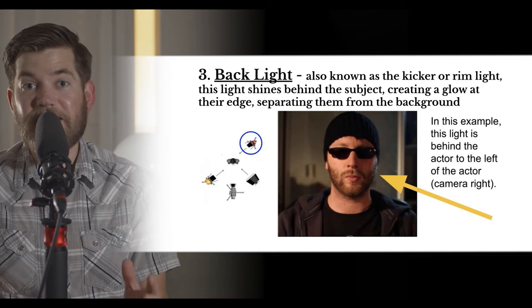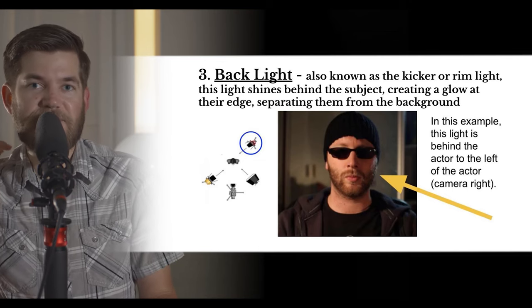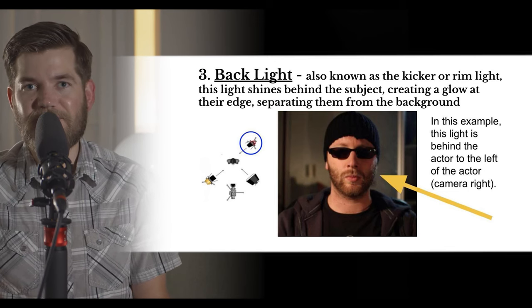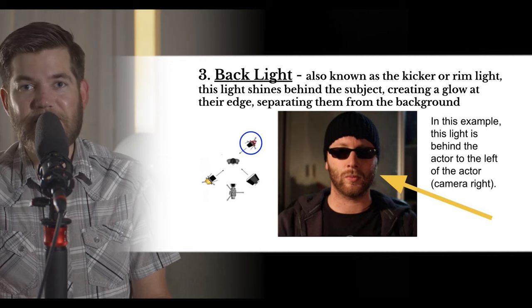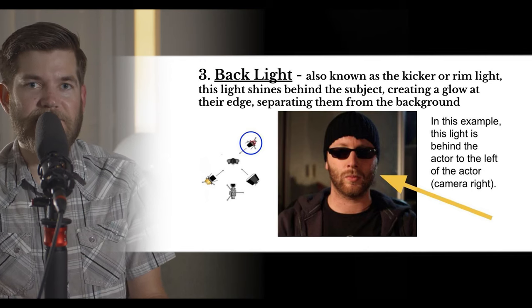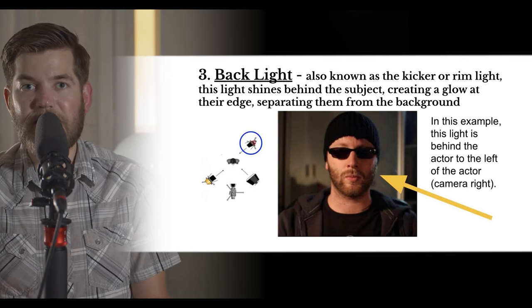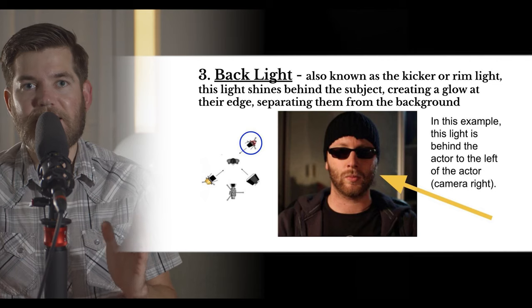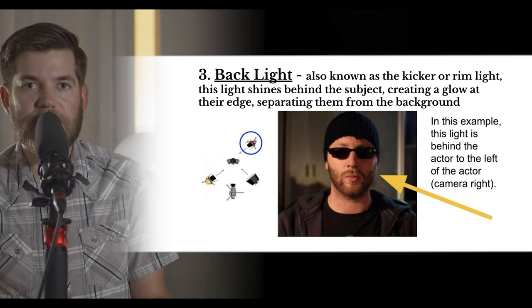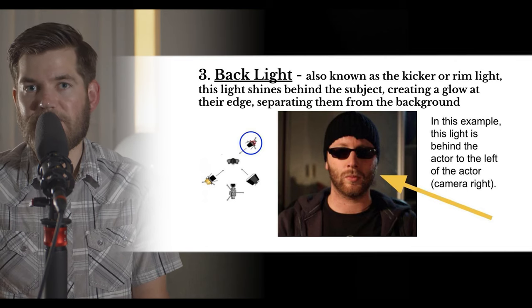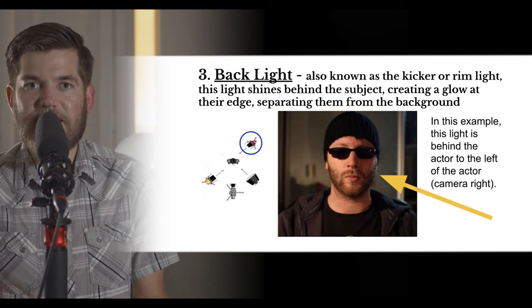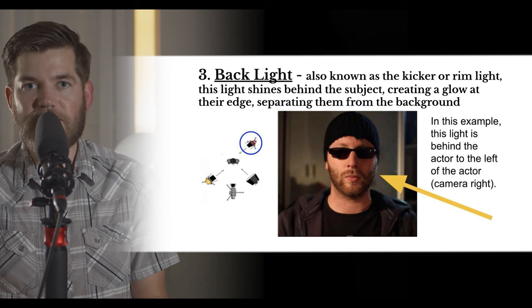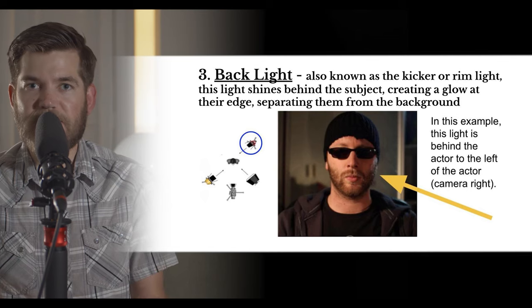The third light in three-point lighting is the backlight, also known as the kicker or rim light. It adds that magical edge around an actor's head — if you've wondered why actors look so different in films than in real life, it's because they've got lights following them around everywhere. Backlights are commonly used to separate the subject from the background. The backlight shines on the subject from behind, though it doesn't have to be directly behind — it's usually angled to the side where the fill light is leaving some shadow.